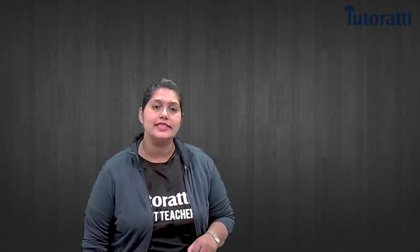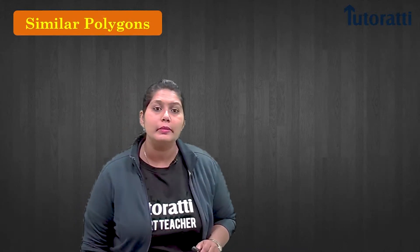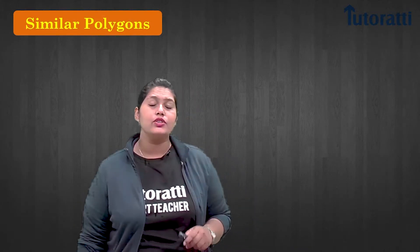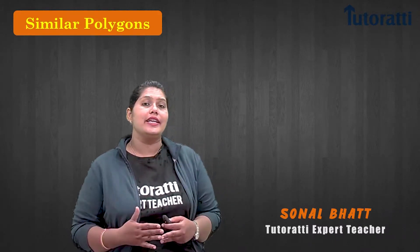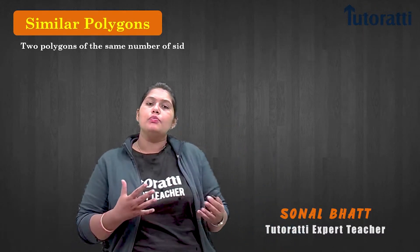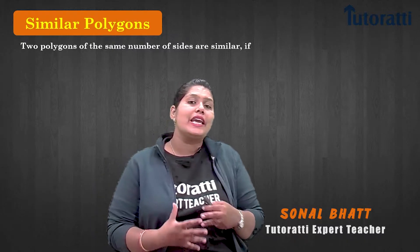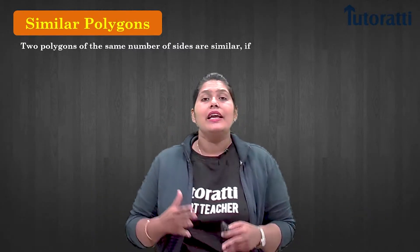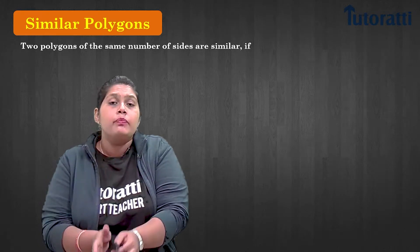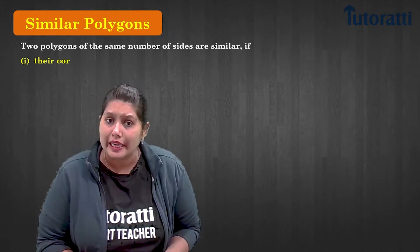Let's understand the concept of similarity in polygons. What do we mean by a polygon? 'Poly' means many, so we are talking about a closed figure that has many sides. Any two polygons having the same number of sides can be termed similar if and only if certain conditions are met.